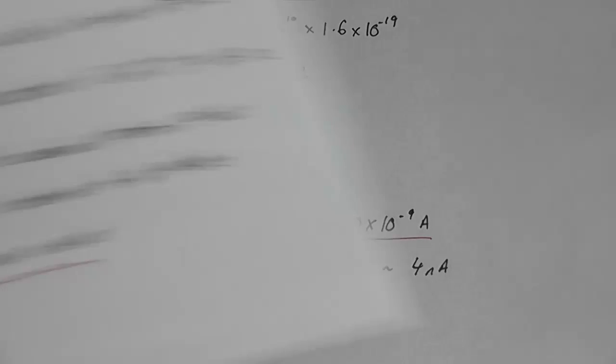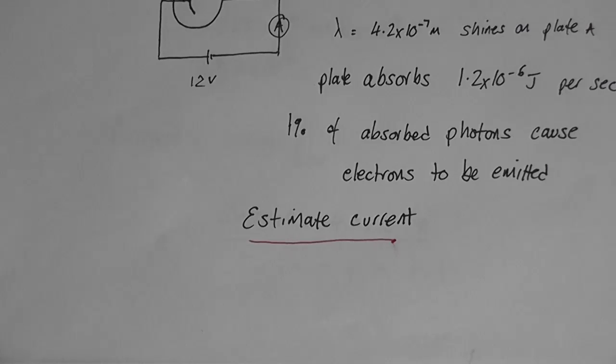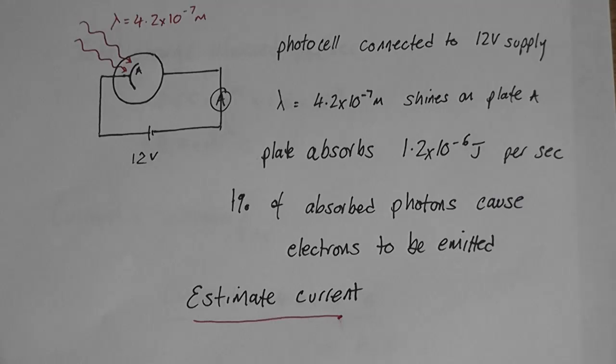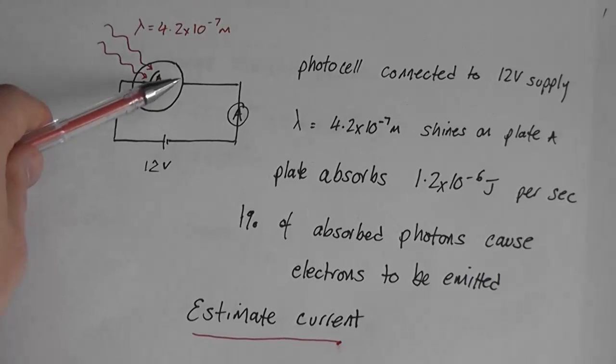The question actually gave you a little bit of a misnomer in the 12 volt supply at the beginning. The 12 volt supply doesn't make the current flow any quicker. It just makes the electrons that are released from that photo plate travel to the other side quicker. There's a slight difference. It doesn't make any more charge flow past the point, it just makes them flow quicker from the photo plate A to this point here.